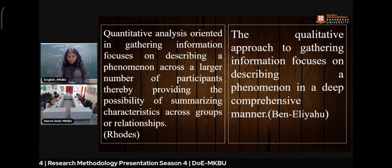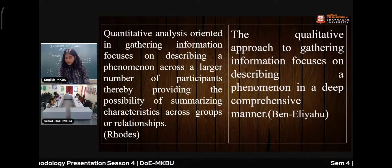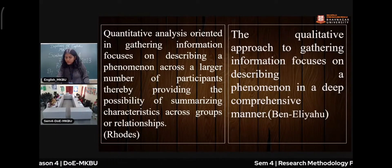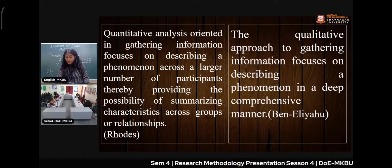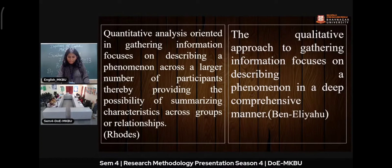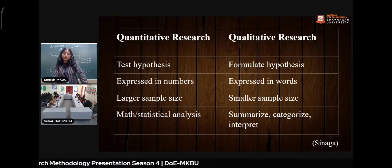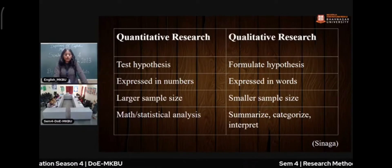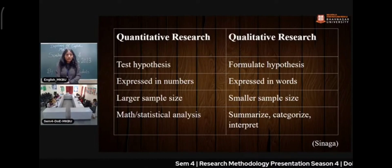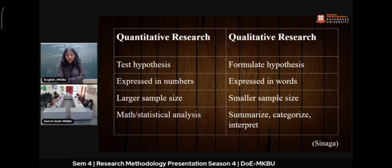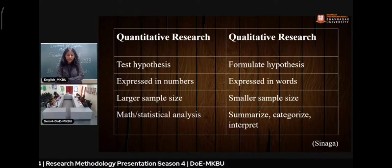The qualitative approach to gathering information focuses on describing a phenomenon in a deep, comprehensive manner. Quantitative research, on the other hand, deals with numbers — basically it goes with quantity, showing data analysis and that kind of thing.